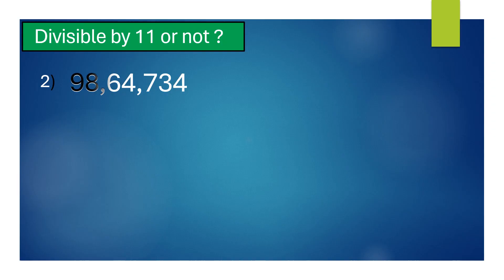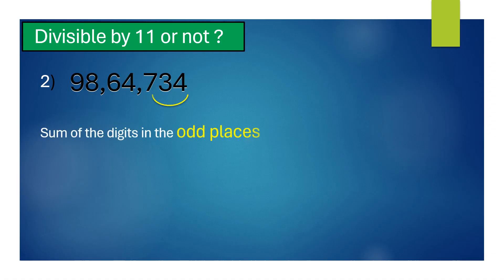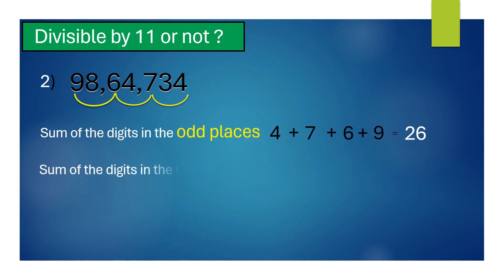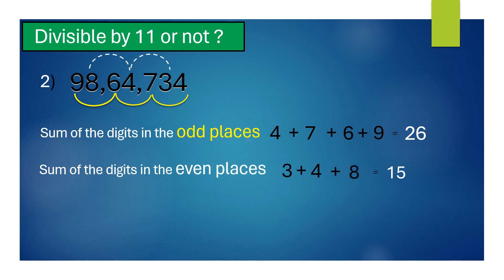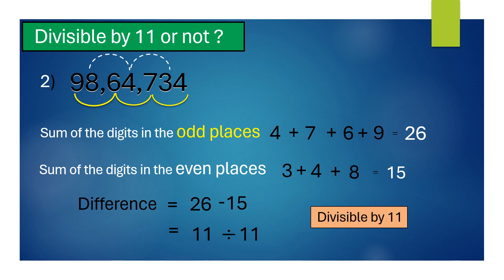For 9,864,734, the sum of the digits in the odd places equals 26, and the sum of the digits in the even places is 15. Their difference is 11, which is divisible by 11. Therefore, the given number 9,864,734 is also divisible by 11.